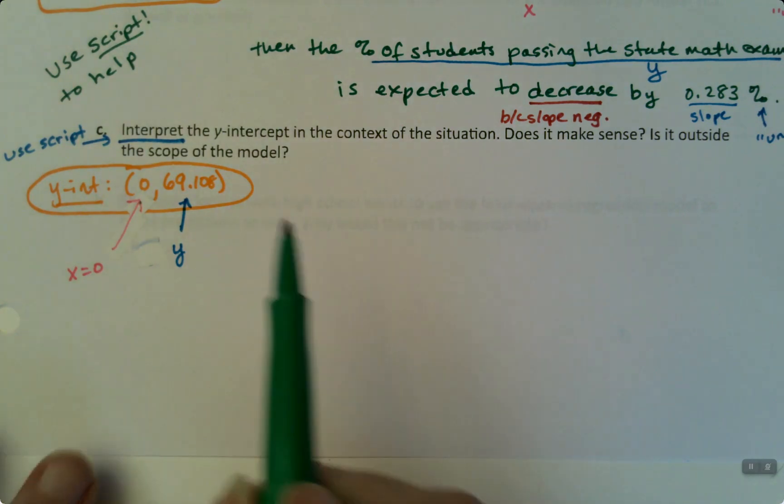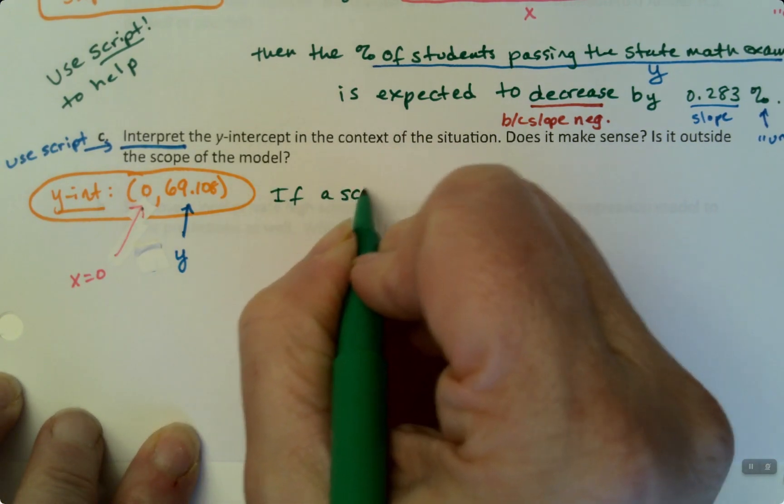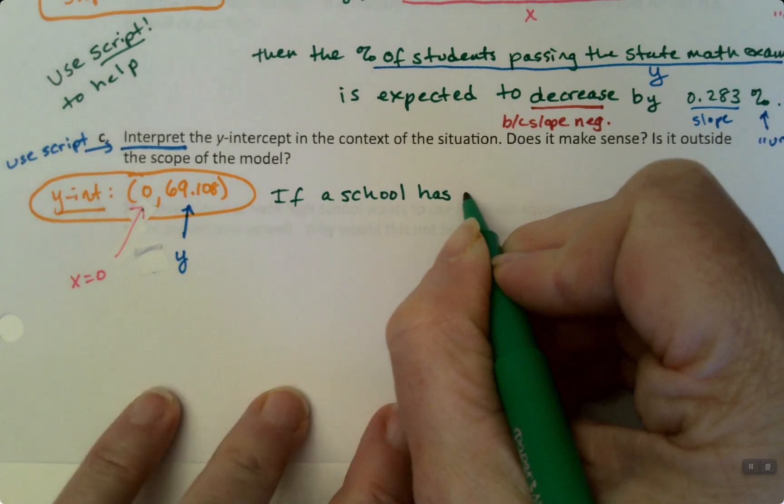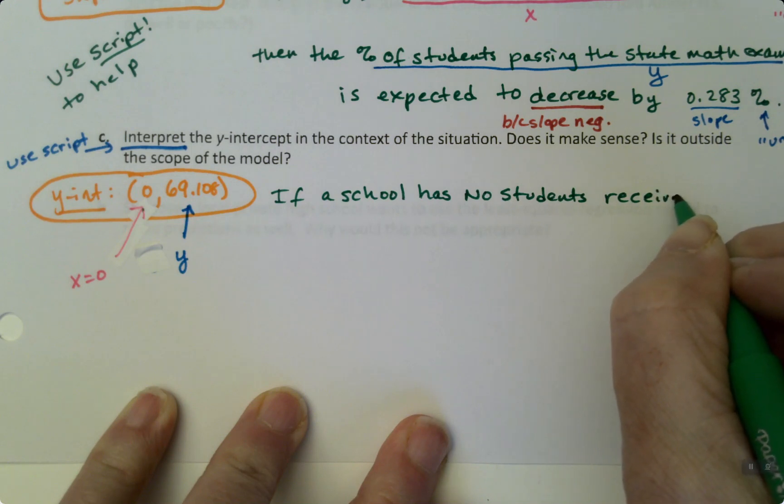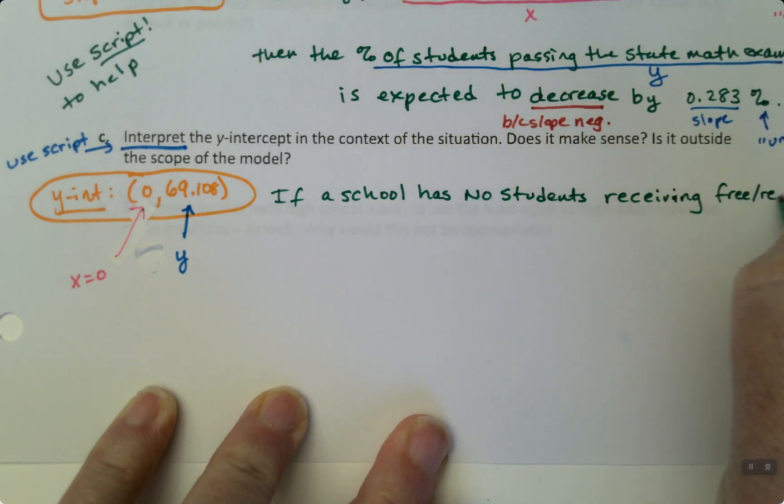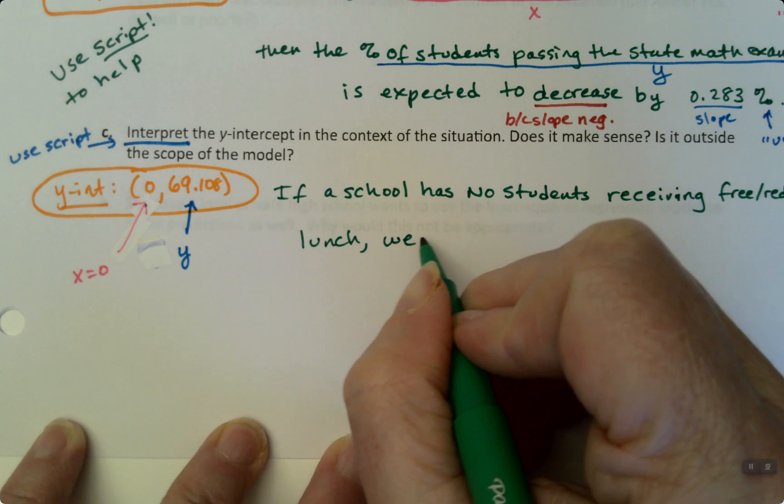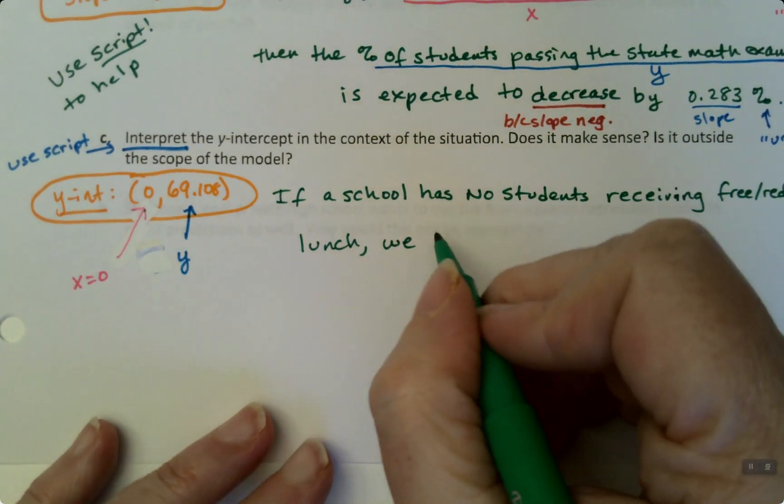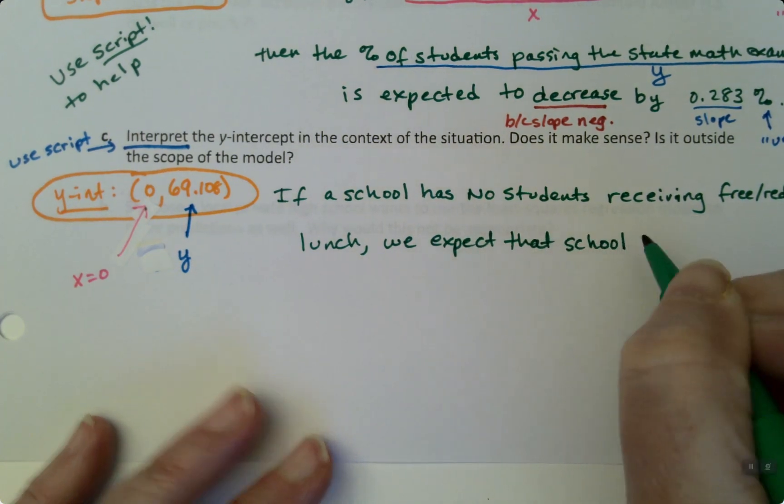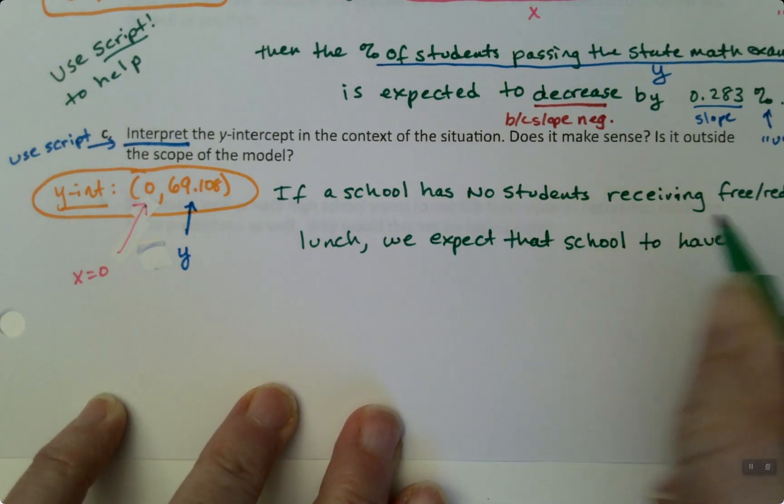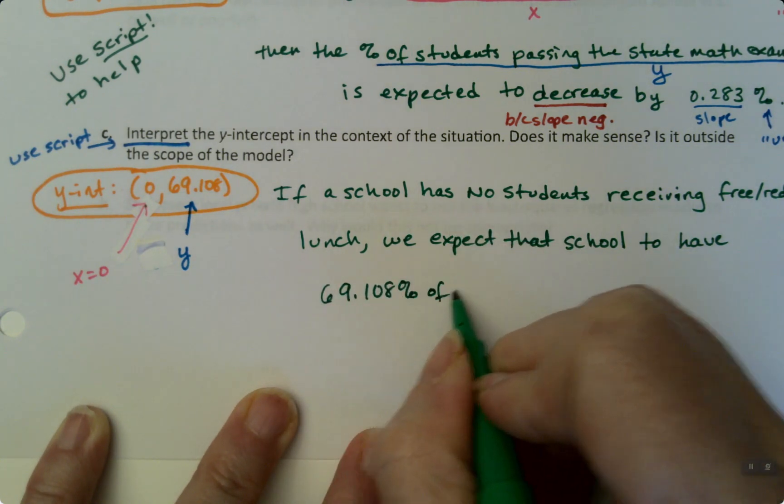Okay, so what are we going to say? We're going to say, if a school has no students receiving free or reduced lunch, so if a school has no students receiving free or reduced lunch, which we expect, or then we expect, I guess, it doesn't matter, we expect that school...